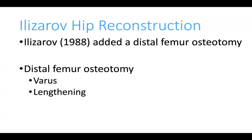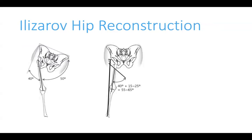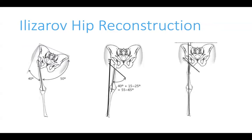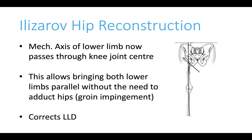To solve these problems, Ilizarov proposed his modification, now known as the Ilizarov hip reconstruction (IHR). In addition to the proximal pelvic support osteotomy, Ilizarov added a distal femur osteotomy where he provided varus and lengthening. The figure on the center shows the PSO alone, and the figure on the right shows the addition of a distal femur osteotomy with varization and lengthening. This causes the mechanical axis to pass through the center of the knee joint, brings both limbs parallel without hip adduction, eliminates groin impingement, and corrects leg length discrepancy.